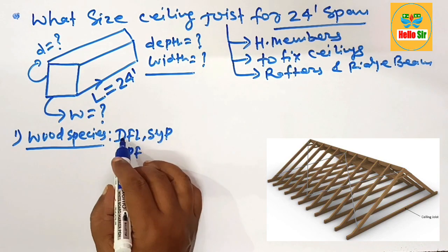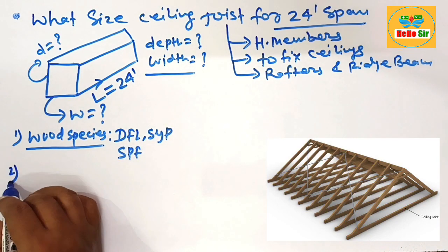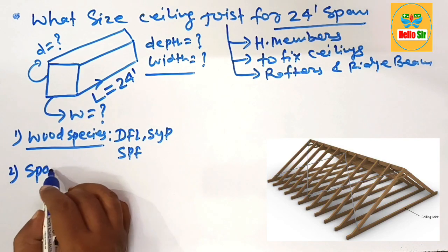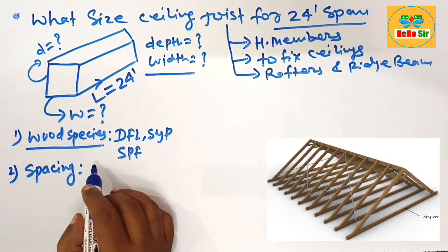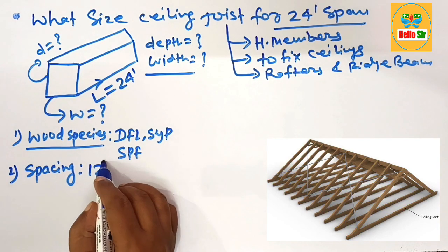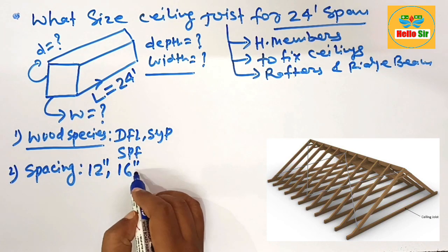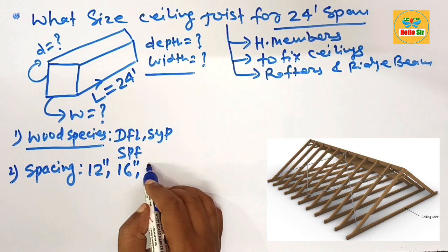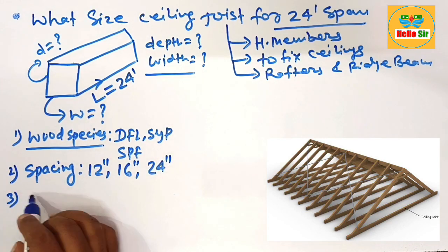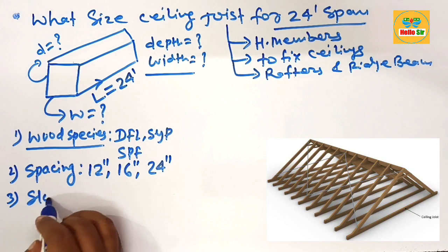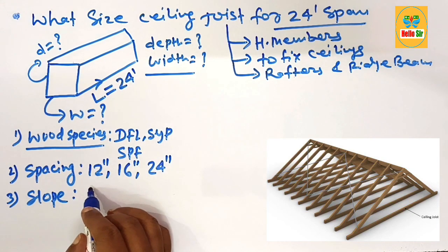The second major factor is the spacing between the joists, which may be 12 inches on center, 16 inches on center, or 24 inches on center. The third factor is roof slope.